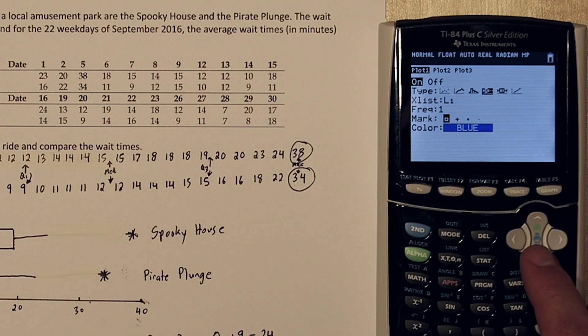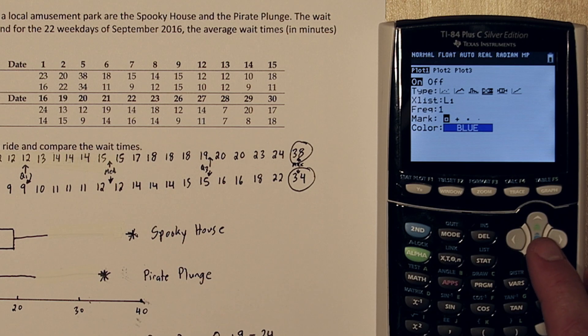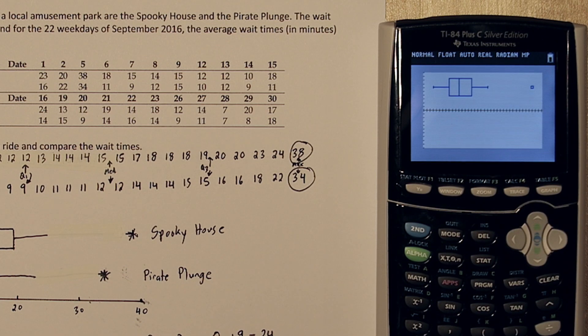So it says, what do you want to make your box plot with? List 1, so we'll leave that. How many times do you want to use List 1? Just once, so leave that as a 1. And you can actually choose which mark for your outliers. We'll just leave it at the default. Now when I press Zoom and 9, I have my box plot.